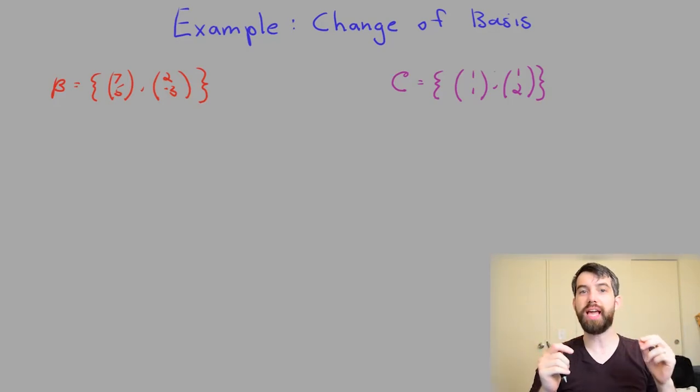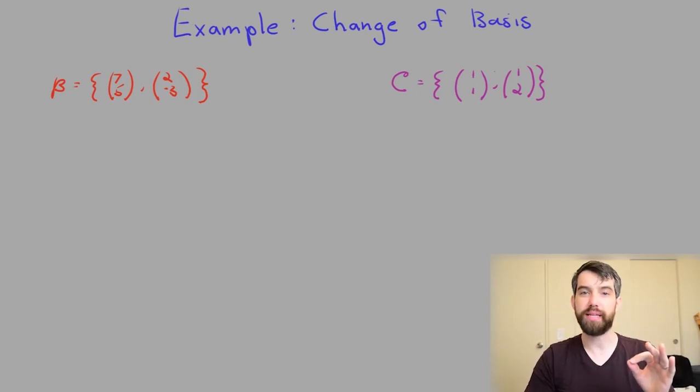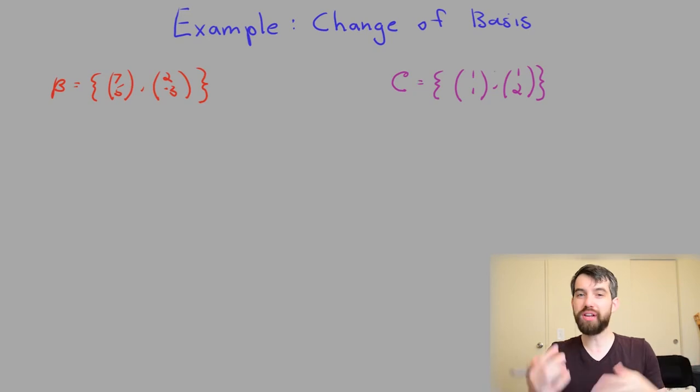In this video, we're going to see a specific example of changing the basis. What I've got down here is two different bases. I have a B basis which has two vectors that are linearly independent, and so they're a basis for R2. And a C basis where I've got another pair of vectors that are again linearly independent, and so are again a basis for R2. Now, what I want to do is figure out how do I transform a vector from the B basis into the C basis.